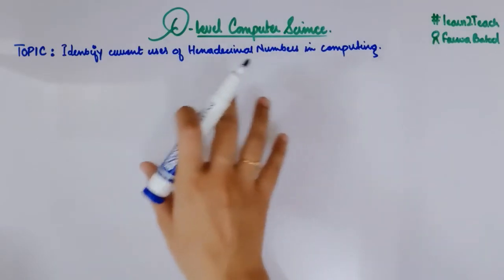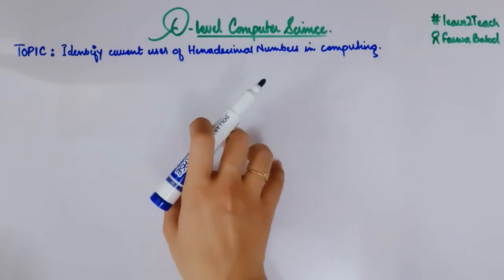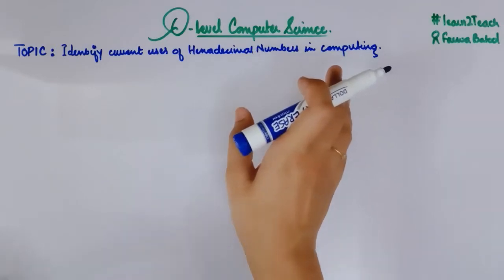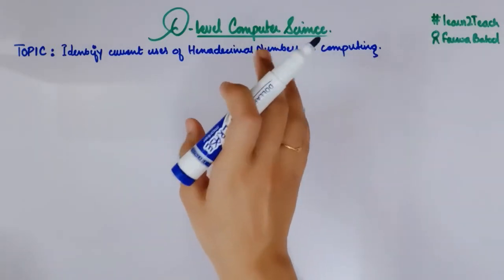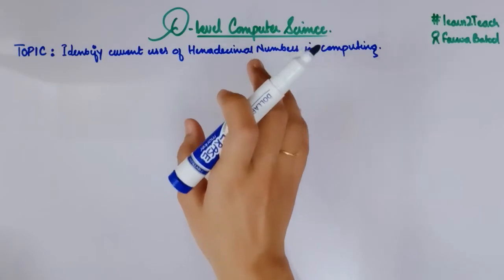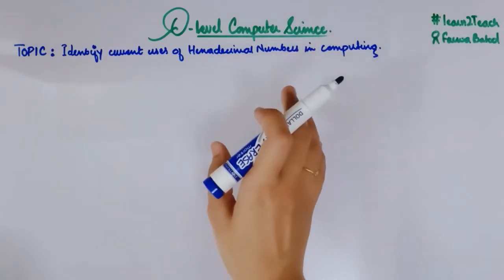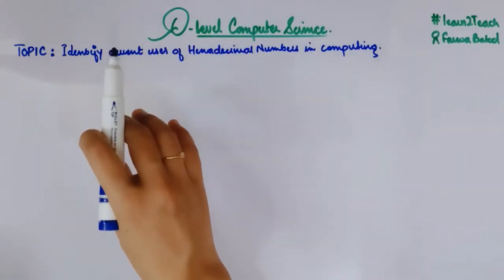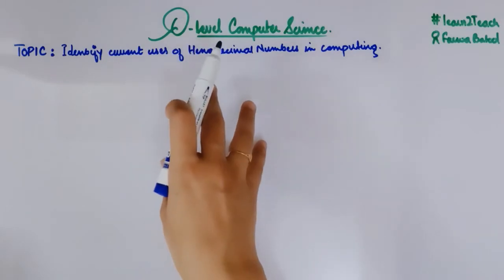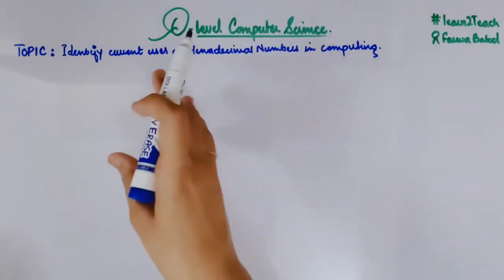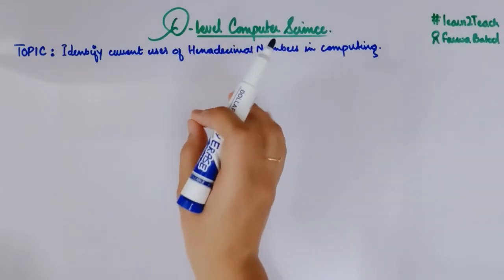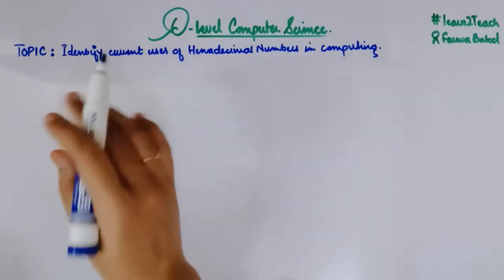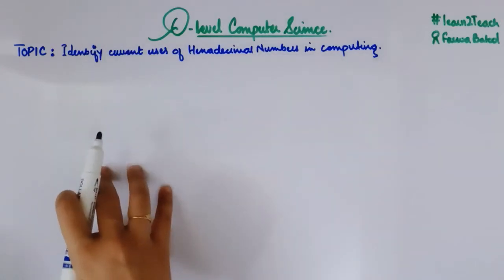In this video I am going to list down all the uses that I have studied in the book or through different past papers and different resources of teachers. I am going to share with you all those uses that I have seen in different resources. We will see the uses in a quick manner in this video and then for more detail I am going to make a separate video on each of the uses of hexadecimal numbers. Let me list down all the uses here and then we will see them in a quick manner.